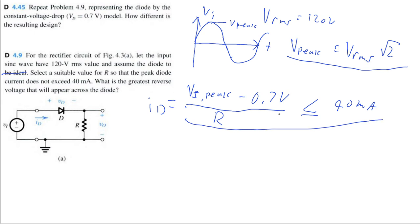Basically we can just multiply R to the other side and divide 40 milliamps, so we get R needs to be greater than or equal to the input peak voltage, which is 120 times the square root of 2 volts, minus 0.7 volts, divided by 40 milliamps. So this means that the minimum resistance we need is about 4.23 kilo-ohms.